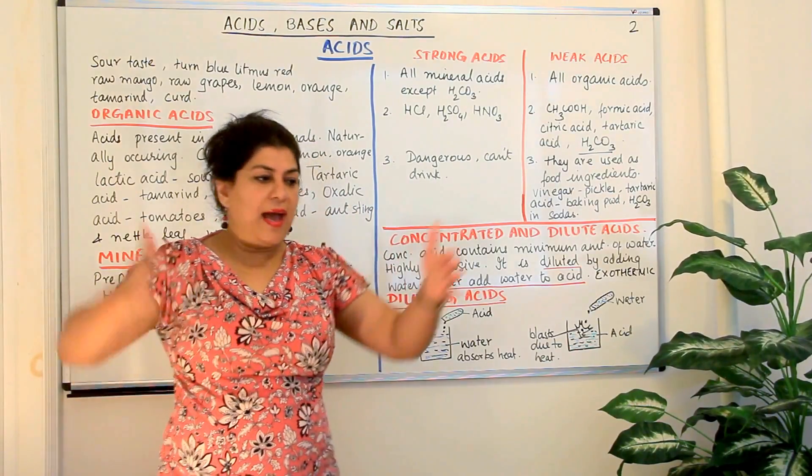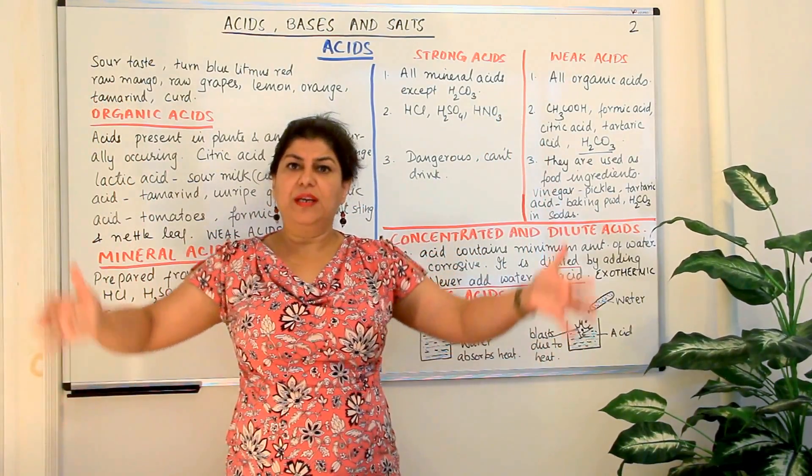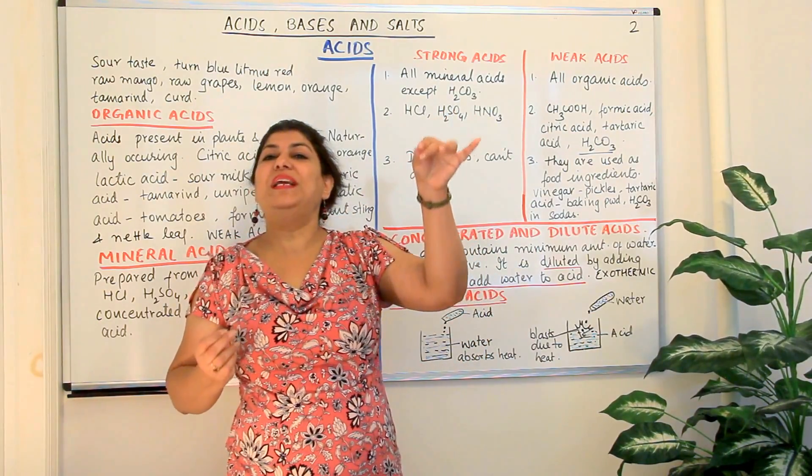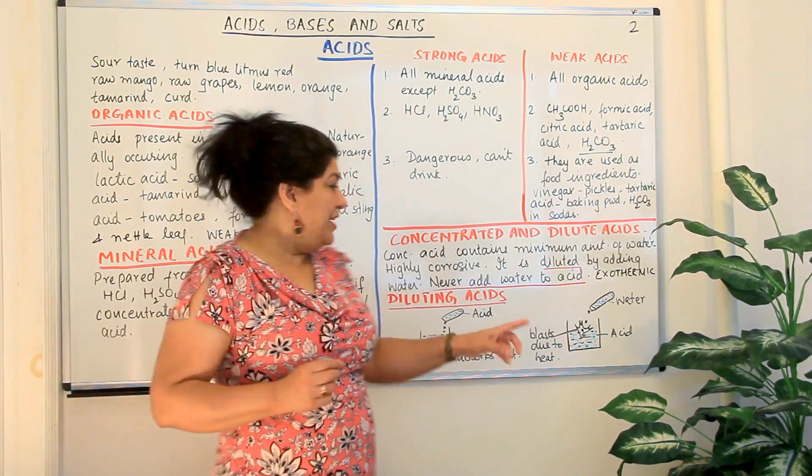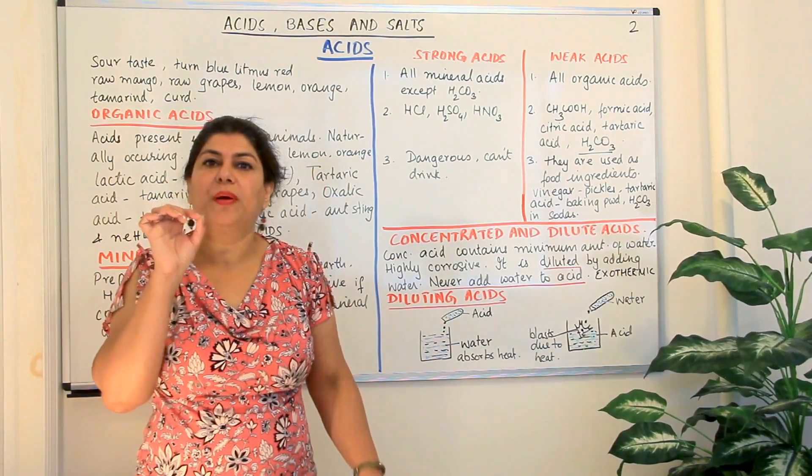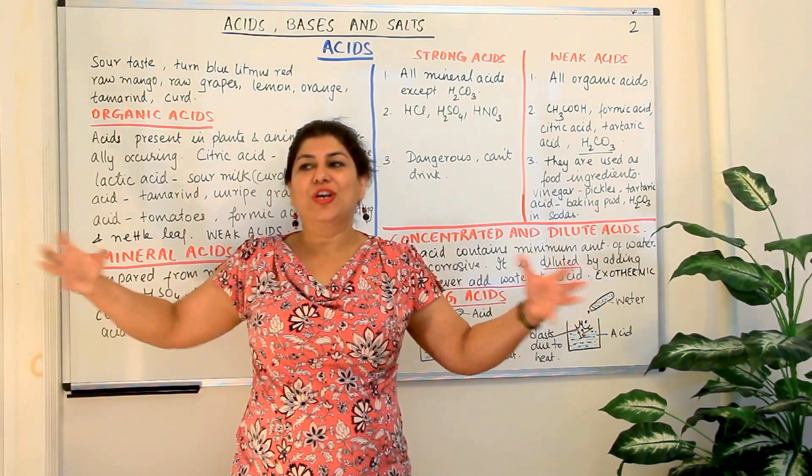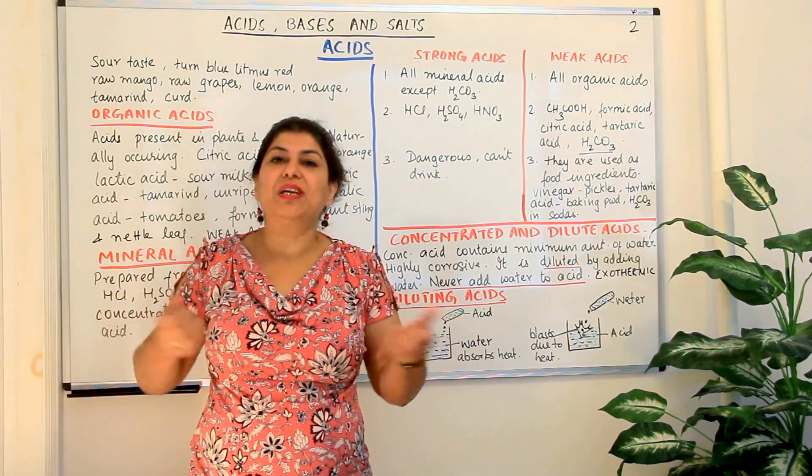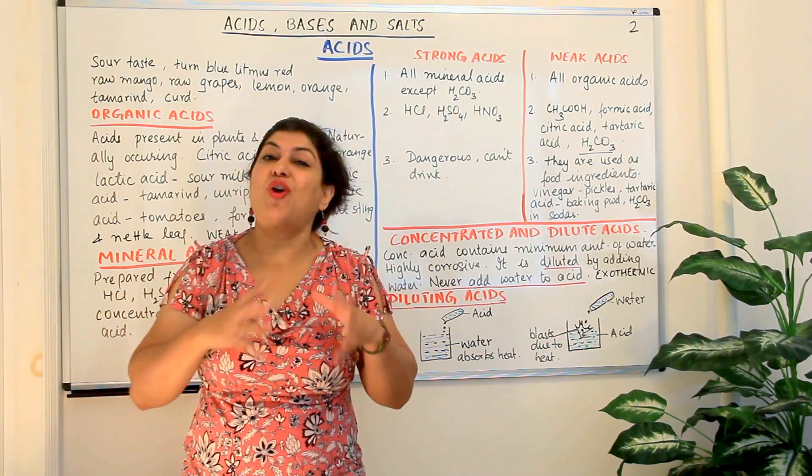So, you can never add water to an acid in order to dilute it. So, what should you do? You should do the opposite. Have water, cold water in a large bath. And then drop wise slowly add the acid. When you do that, the acid is only one drop. And the water is a lot.